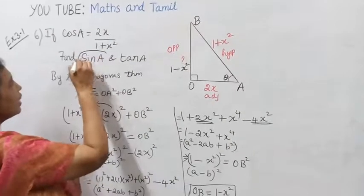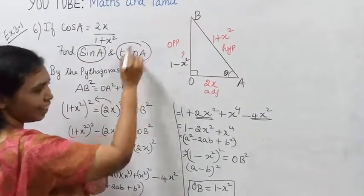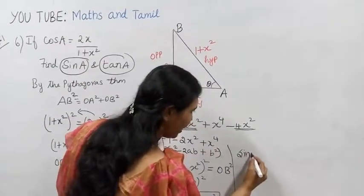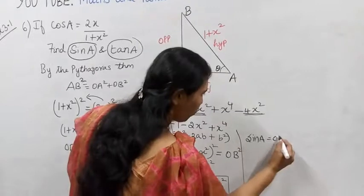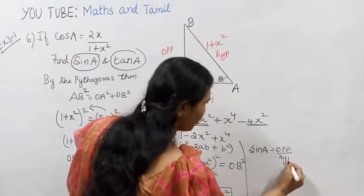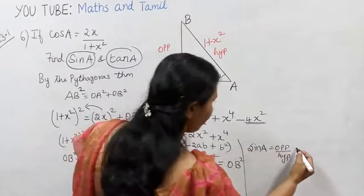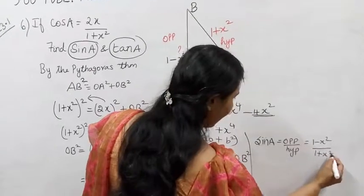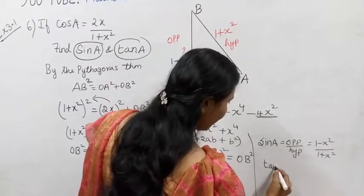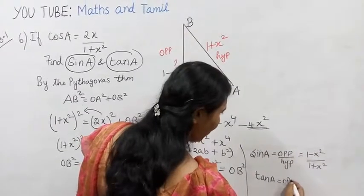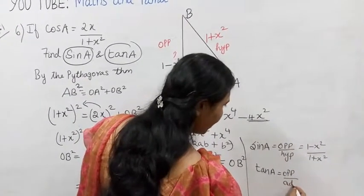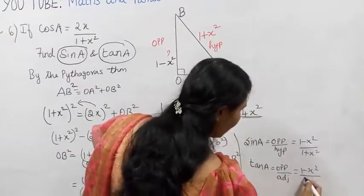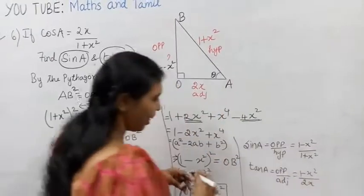Now we can answer the question: sin A is opposite by hypotenuse, so sin A equals (1 minus x squared) divided by (1 plus x squared). Tan A is opposite by adjacent, so tan A equals (1 minus x squared) divided by 2x.